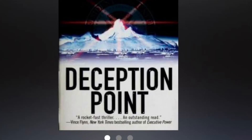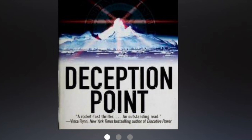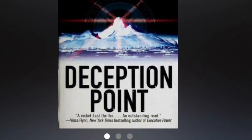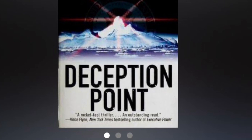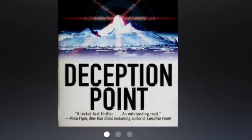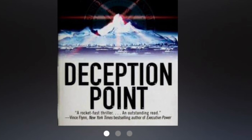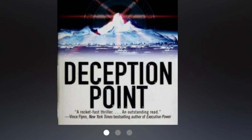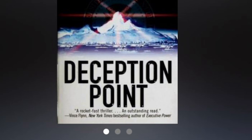Long-form book review of Deception Point by Dan Brown. Deception Point is a 2001 techno-thriller novel by Dan Brown. It was the author's third published novel and his second international bestseller after Angels and Demons. It tells the story of White House intelligence analyst Rachel Sexton and Harvard symbologist Michael Tolland as they investigate a possible hoax involving a meteorite found in the Arctic. The novel explores themes of scientific discovery, government corruption, and the ethical implications of space exploration.